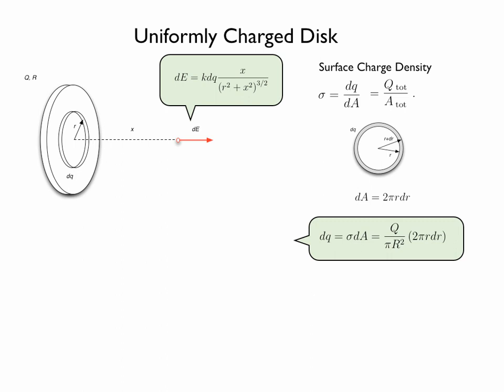The charge residing on that ring will be equal to the surface charge density sigma times the area of that ring dA. If we replace sigma with the value of the total charge over the total area, we get for the charge on the ring: